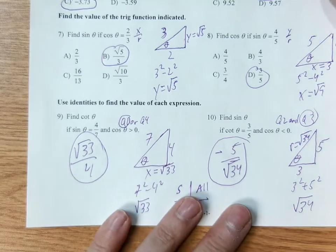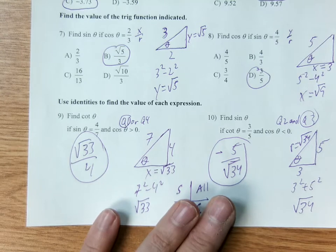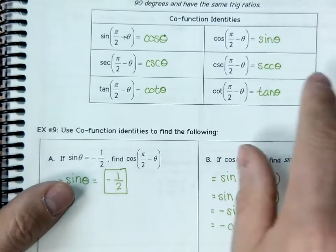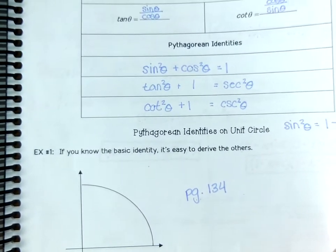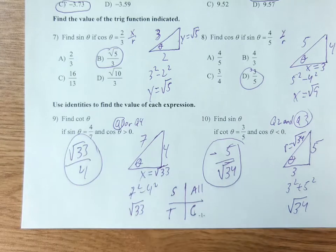I did make half the questions multiple choice — questions 1 through 8 are multiple choice, 9 through 16 are not. For the test, I'm most likely going to give you a sheet with the co-function identities, even-odd identities, Pythagorean identities, and the reciprocal quotient identities. I don't really care if you memorize all the identities — I just care if you can use them.